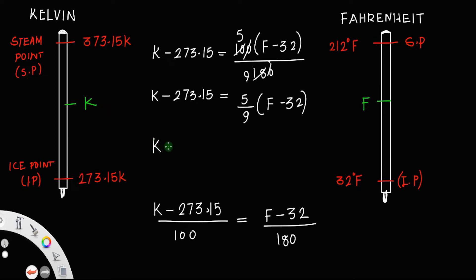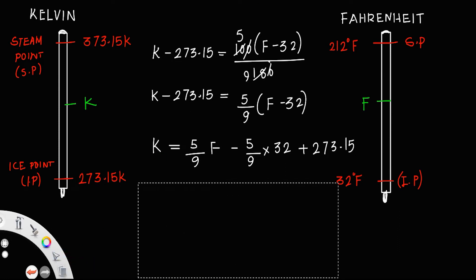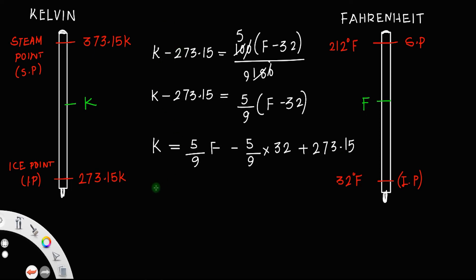So K equals 5/9 times F, minus 5/9 times 32 plus 273.15. Multiplying 5/9 by 32: 5 times 32 is 160, and 160 divided by 9 is 17.78. So K equals 5/9 F minus 17.78 plus 273.15.